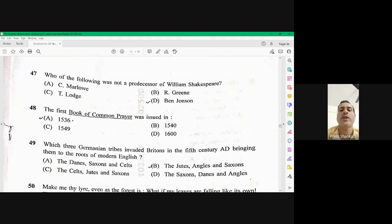Question number 47, who of the following was not a producer of William Shakespeare? So as you know, all the university wits, Green, Marlowe, Lodge, they were of the producers. Ben Johnson was the contemporary of William Shakespeare. So Ben Johnson is the right answer.